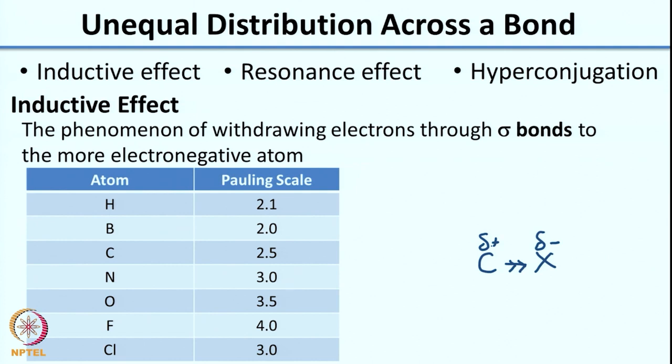Imagine two friends standing next to each other with a bag of chocolates — the stronger one ends up pulling more chocolates toward themselves. Similarly, if X is more electronegative, it grabs more electrons toward itself; since electrons are negatively charged, you get a delta minus on X. To compare electronegativity, there is a scale called the Pauling scale, which ranks atoms based on their electronegativity. As the number goes up, the electronegativity increases.